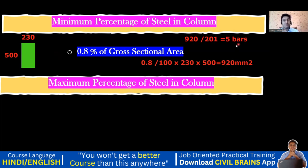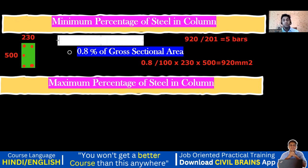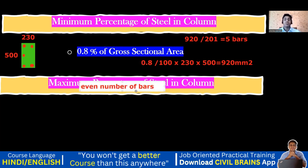Practically, can we provide 5 bars? We'd place one at each corner — that's four — then a fifth somewhere, but then the lateral ties can't be properly anchored. So remember: in a column, you must always provide an even number of bars. You cannot give 1, 3, or 5 bars.